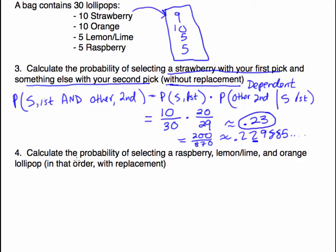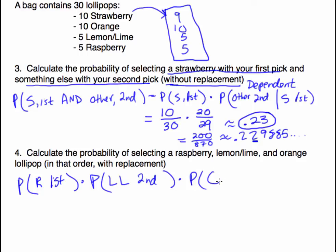The last example: calculate the probability of selecting a raspberry, then lemon lime, then orange lollipop in that order without replacement. Actually, wait — the instructor clarifies this is with replacement. With replacement means we don't have to worry about changing denominators and numerators, because we look at the lollipop and put it back.